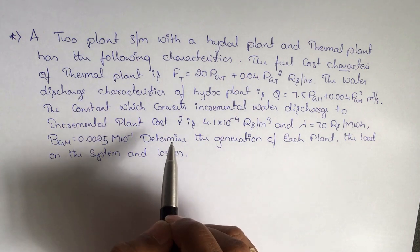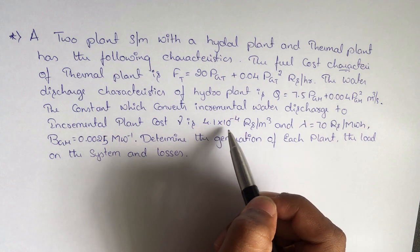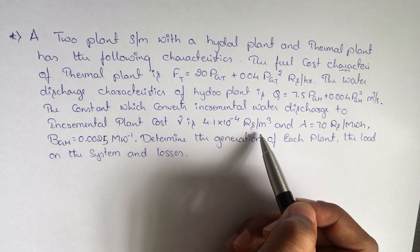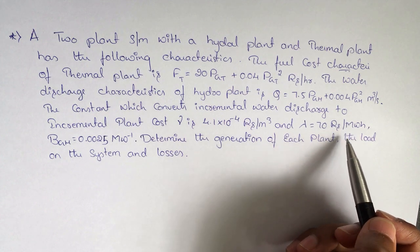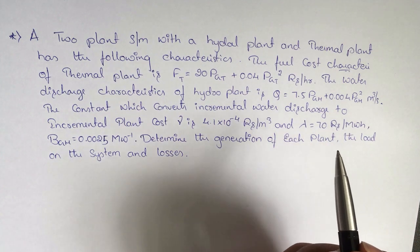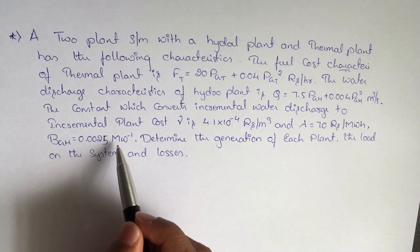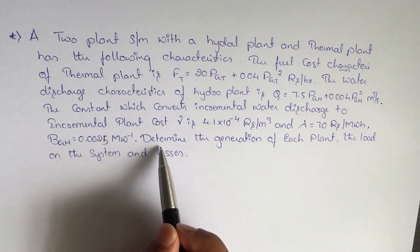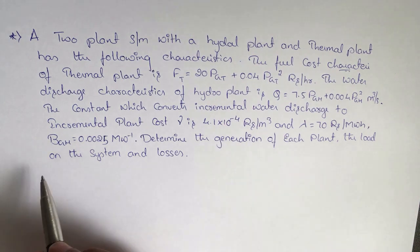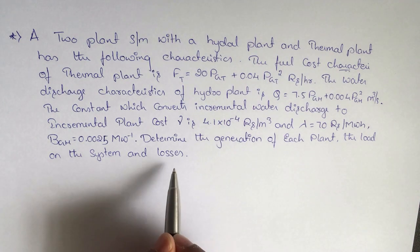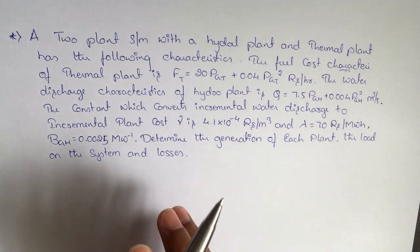The constant gamma, which converts incremental water discharge to incremental plant cost, is equal to 4.1 × 10⁻⁴ rupees per meter cube. Lambda is equal to 70 rupees per megawatt-hour, and B_GH is equal to 0.0025 megawatt inverse. We need to determine the generation of each plant, the load on the system, and the losses.